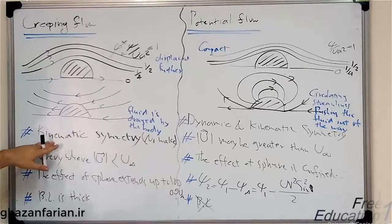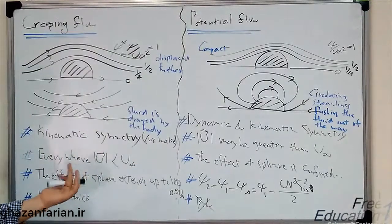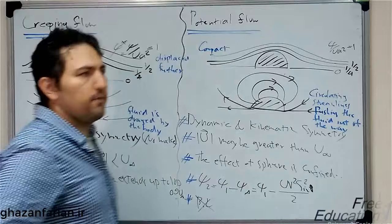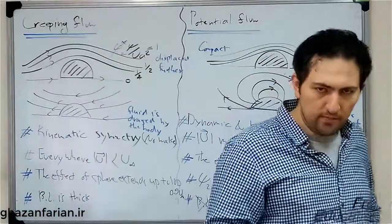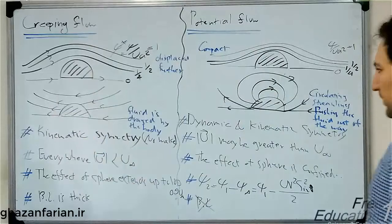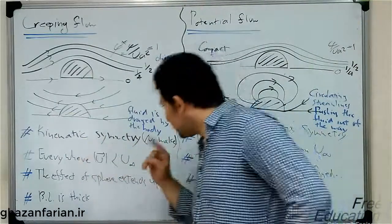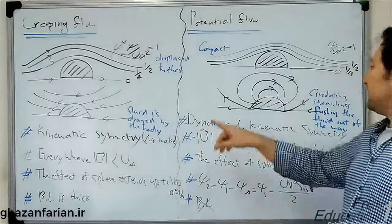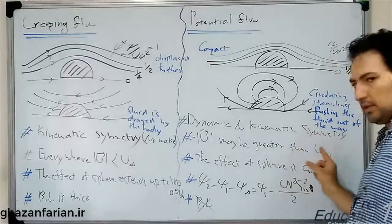Another point here is about the kinematic symmetry, or the symmetry of the flow field. Both of them possess up and down symmetry, and forward and aft symmetry. But here we have only the kinematic symmetry. But in the potential flow, we have the dynamic and kinematic symmetry.